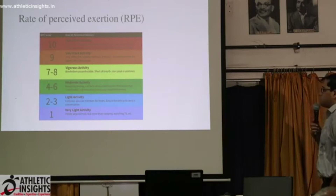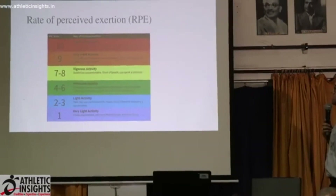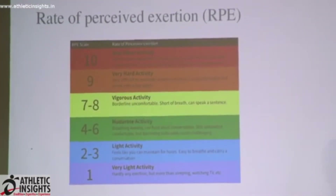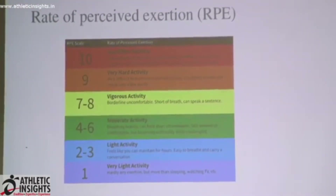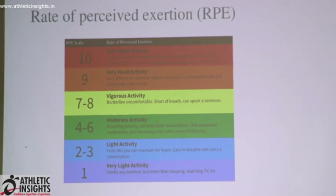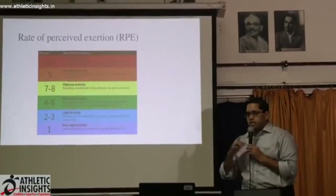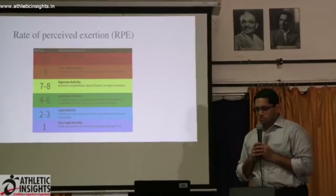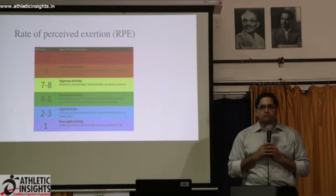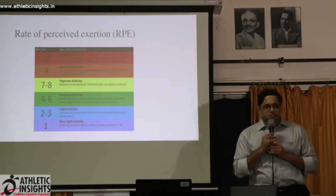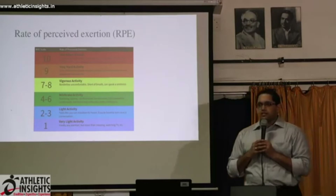On the screen, every single number has an activity level assigned to it. The way you use this scale is: say today you go out for a 5K run. When you come back, you ask yourself how hard was it — not a number, but the feeling. If you say 'that was comfortable, that was fairly easy,' you would assign a number around 2 to 3.